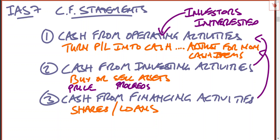If you just go through a cash flow statement — do your adjustment to profit before tax for non-cash items, do your working capital, then look for any buying and selling of assets and any financing activities given to you in the question — you should have almost everything you need to pass the paper. Then if you go ahead and look for other items that require workings, you should have already passed by the time you get to those.